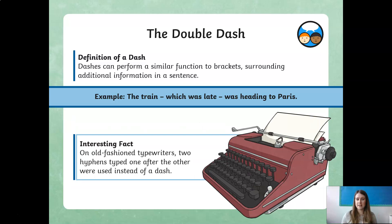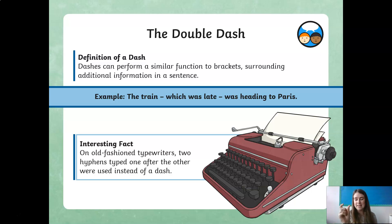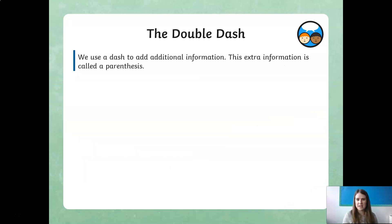Here's an interesting fact — you may not know what a typewriter is. These are before my generation, but it's like the very first example of a keyboard where you could touch type. On old-fashioned typewriters, two hyphens typed one after the other were used instead of a dash, because they didn't have a dash key. On modern keyboards, there's a key near the numbers — press it one way for a hyphen, hold another button and press it again for a dash.